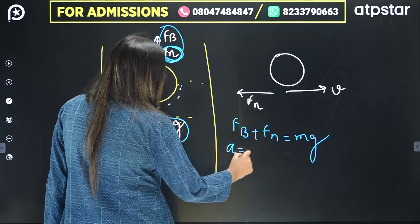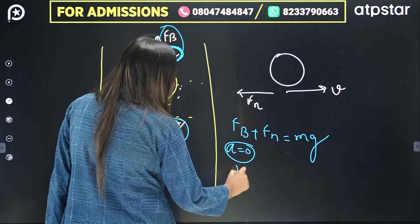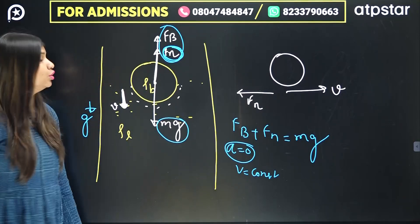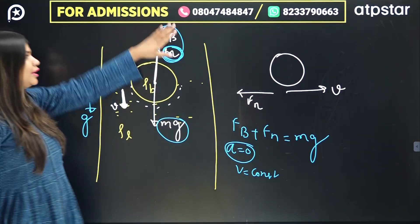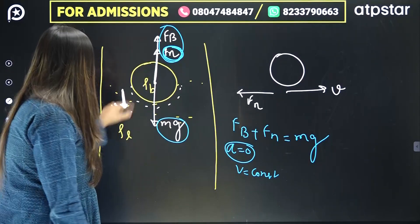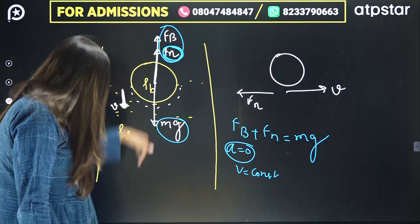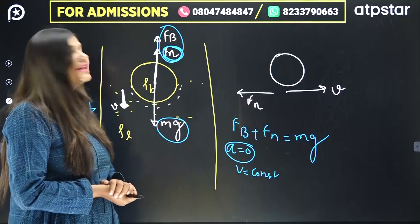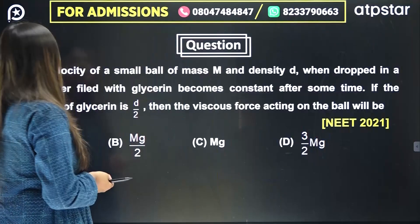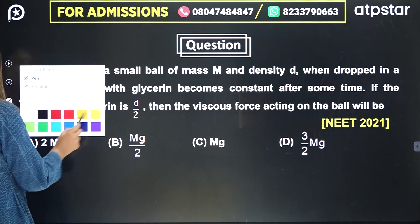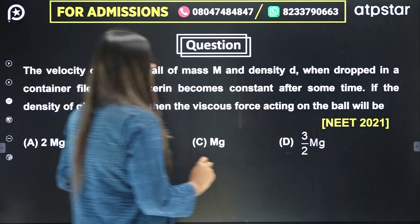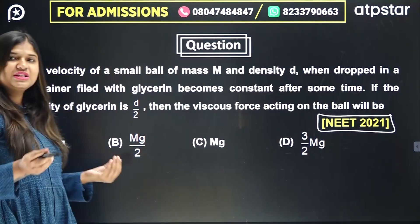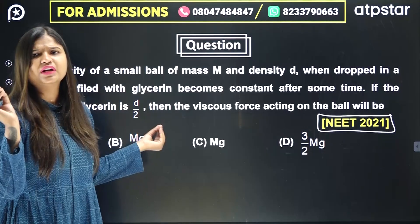When acceleration is zero, velocity becomes constant — this is terminal velocity. After Mg equals buoyant force plus viscous force, velocity will be constant. Now let's see how to solve a NEET 2021 question using this concept.